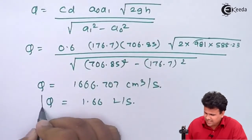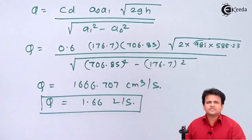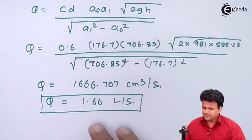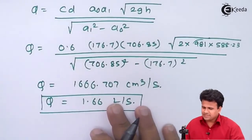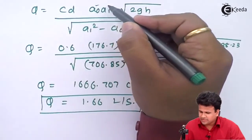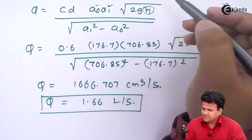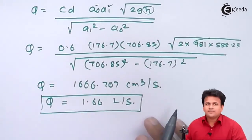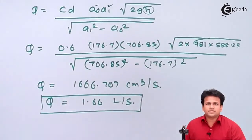We have calculated the discharge, along with area a1, a0, and the head h in terms of (p1 − p2)/(ρg). I hope you have understood how to solve problems related to an orifice meter with a liquid other than water. Thank you.